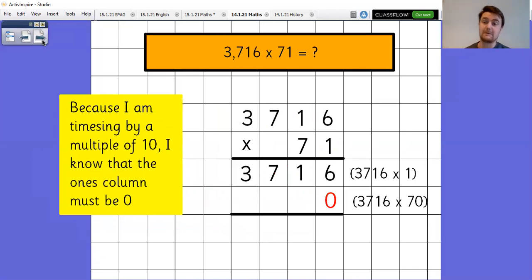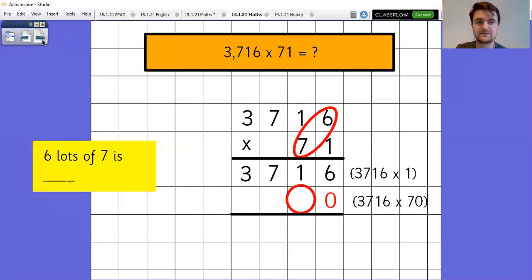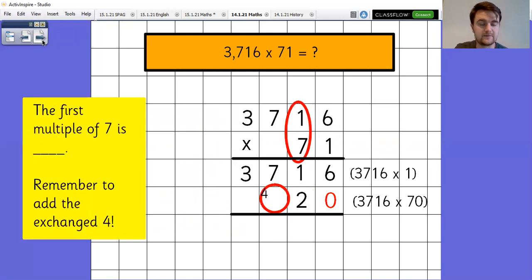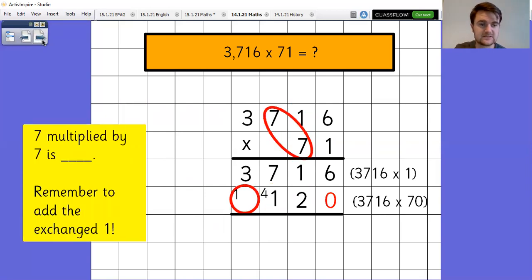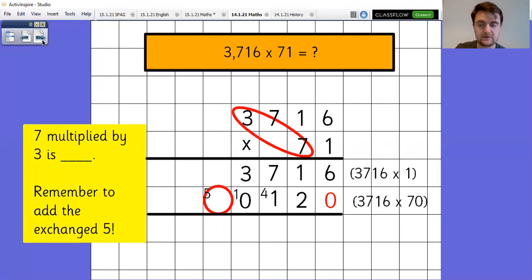Now, for my second row, I'm multiplying by a multiple of 10. So I'm going to put that place value placeholder zero into the ones column. And now I just need to worry about doing six times seven this time instead of six times 70. So six lots of seven is 42. I can't fit 42 in the tens column. So I'll put the two there and I'll exchange the four. The first multiple of seven is seven. Add the exchange four gives me 11. I can't fit 11 in the hundreds. So I'll put the one in there and I'll exchange the one. Seven multiplied by seven is 49. Add the other one is 50. And finally, three multiplied by seven is 21. Add the exchange five is 26.